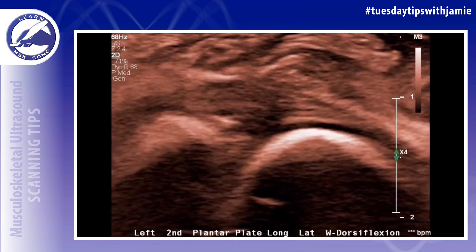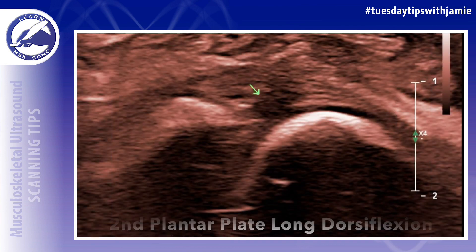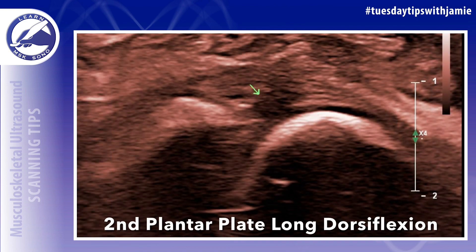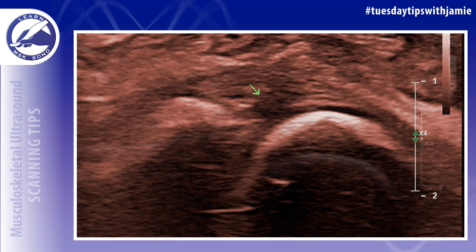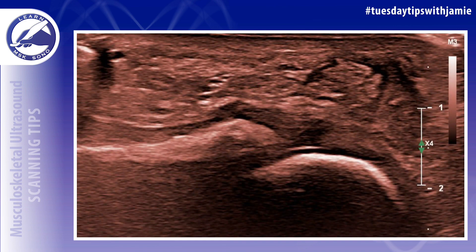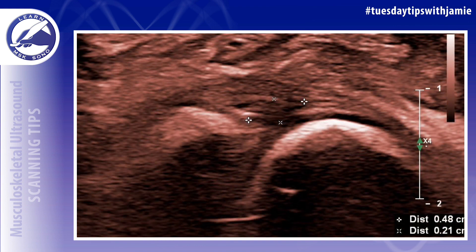Plantar plate tears can be partial or full thickness and appear as a focal hypoechoic defect in the normally echogenic substance of the plantar plate. Plantar plate tears most commonly occur at the lateral insertion of the second plantar plate at the level of the MTP joint.